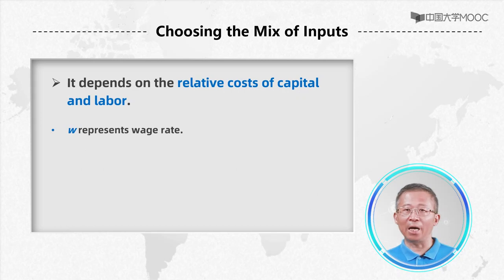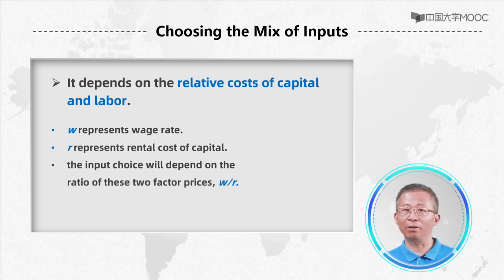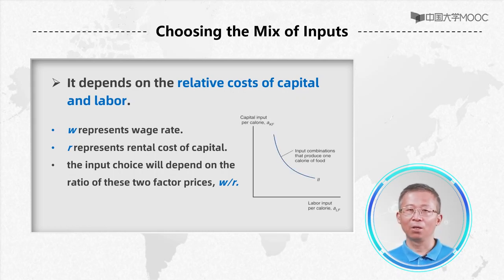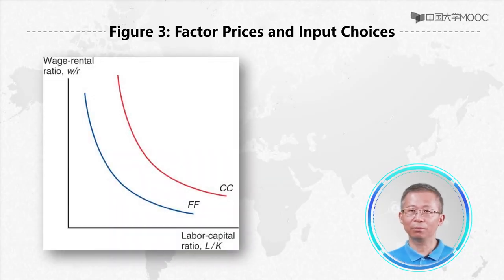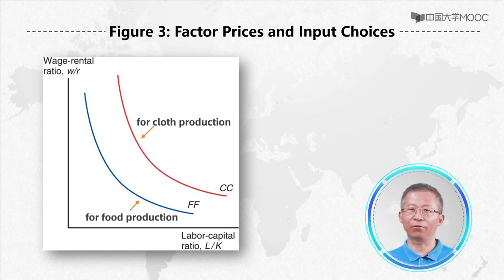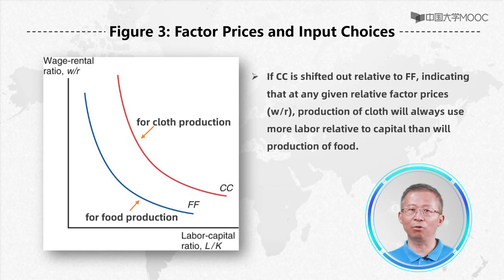If W represents the wage rate and R represents the rental cost of capital, then the input choice will depend on the ratio of these two factor prices, W/R. Look at figure 2 — factor prices and the input choice. There is a corresponding relationship between W/R and the labor-capital ratio L/K used in production. Look at figure 3, which shows two curves: one for clothes production, CC, and another for food production, FF.